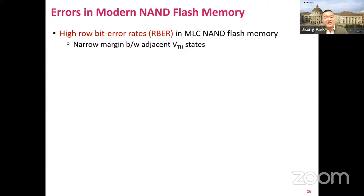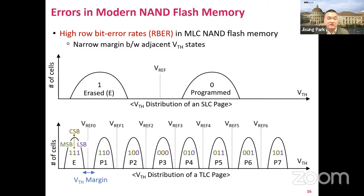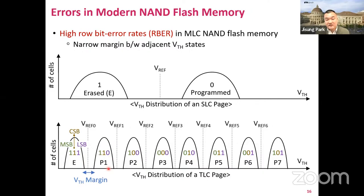Unfortunately, modern NAND flash memory exhibits very high raw bit error rates due to the multi-level cell technique. This is the threshold voltage distribution of a single-level cell page, and this is for a triple-level cell page, where single cells store three bits using eight different threshold voltage states. The TLC technique significantly decreases the margin between two adjacent threshold voltage states, meaning even very small threshold voltage shifts can cause bit errors much more easily.